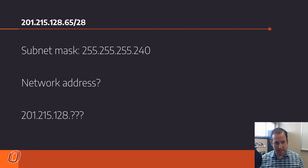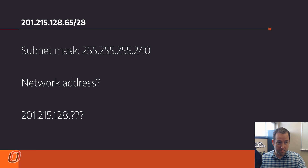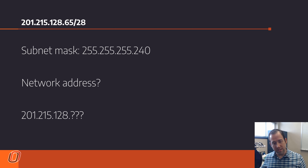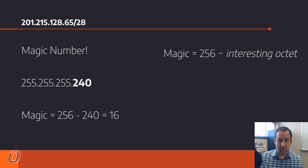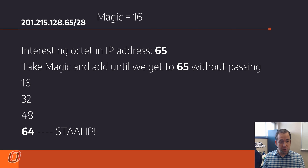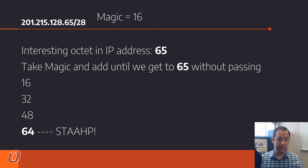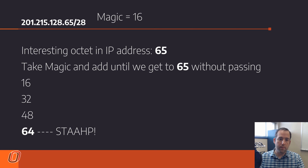Now we find the network address, starting with the interesting octet. Where there's a 255 in the subnet mask, the network address number is the same as the IP address number, so the first three numbers are 201.215.128. The last octet is the interesting octet. Our magic number is 256 minus 240, which is 16. The interesting octet in the IP address is 65. We add 16 repeatedly: 16, 32, 48, 64. If we go past 64 we go past 65, so 64 is that number in our network address.